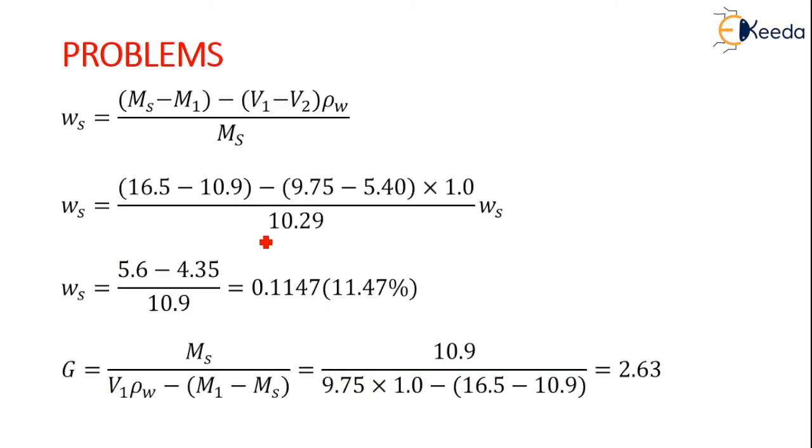We already know the formula to calculate the shrinkage limit, ws. That is (Ms - M1) - (V1 - V2) times ρw, divided by Ms. Just substitute all the given values in the problem.